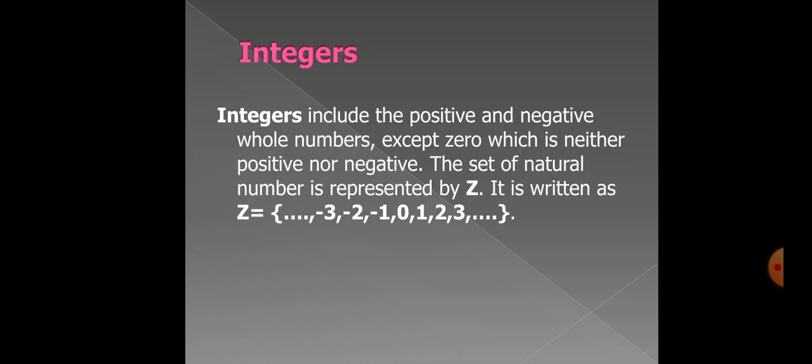The next definition is integers. Integers include the positive and negative whole numbers except zero, which is neither positive nor negative. The set of natural numbers are represented by Z. It is written as Z equal to calibrator start.